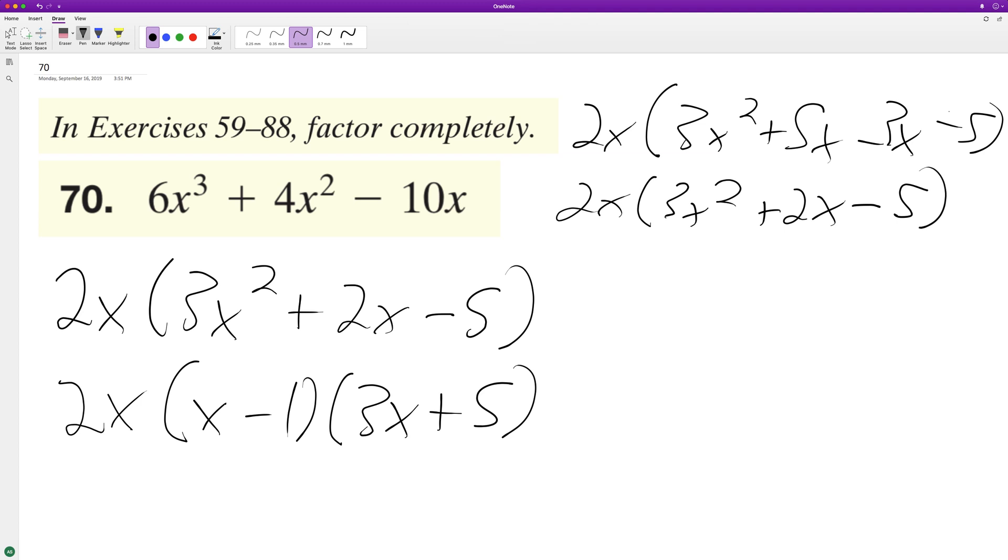And finally distribute the 2x. We get 6x cubed plus 4x squared minus 10x. Since this matches up with the original trinomial, this means that this is correct. I hope this problem helped you out. Appreciate you watching, have a great day.